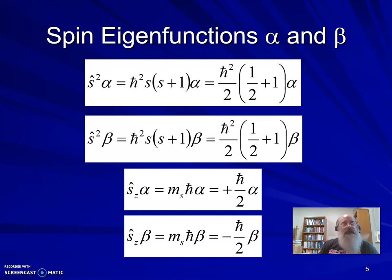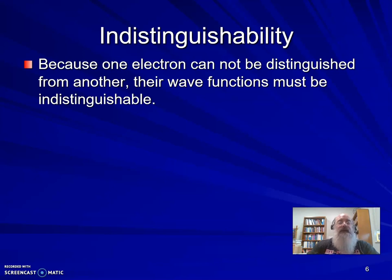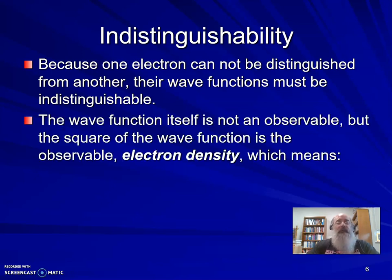One of the principles of quantum mechanics is that two electrons, two identical particles in a system, have to be indistinguishable from one another. So we refer to that as indistinguishability. This is a good thing to keep in mind as a possible vocabulary term on our last regular test and on the final. Because one electron can't be distinguished from another, their wave functions have to be indistinguishable. The wave function itself is not an observable, but the square of the wave function is an observable. The square of the wave function gives us electron density.